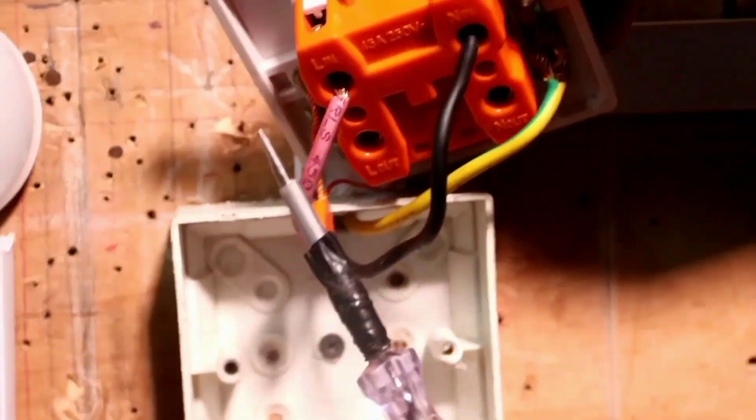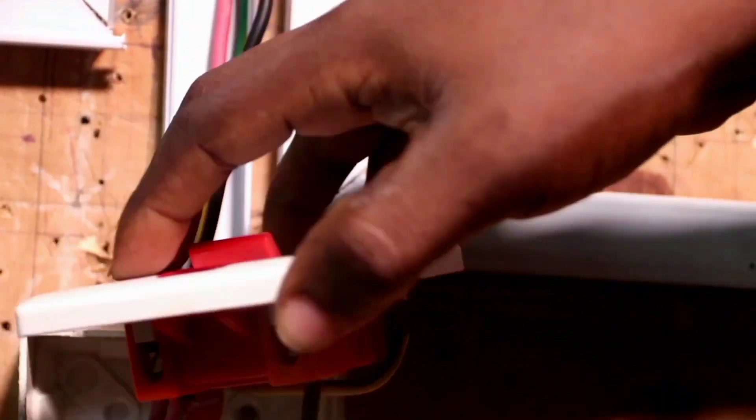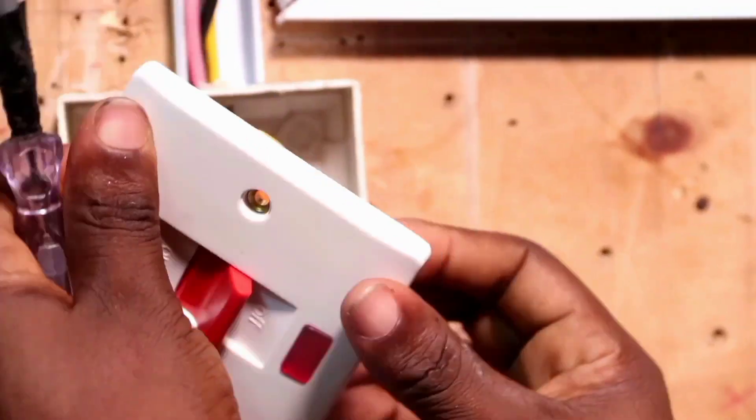Now I have connected my live in to this terminal, my neutral to this terminal, my earth here. Now my DP switch is supplied with power.